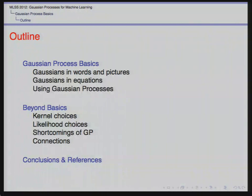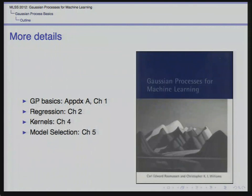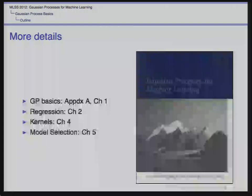We've talked about the Gaussian process basics and seen how GPs can be used in regression. Now I want to go slightly beyond the basics. One thing I wanted to mention is this book written by Carl Rasmussen and Chris Williams, 'Gaussian Processes for Machine Learning.' A lot of what we've talked about is within the first five chapters. It's available online and any more details should be found there.